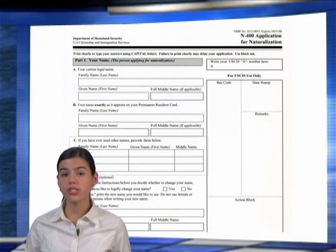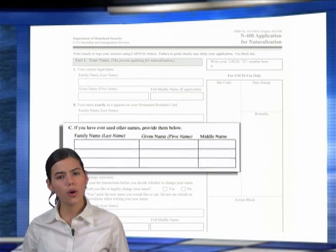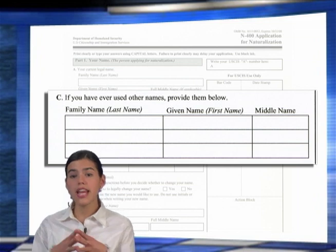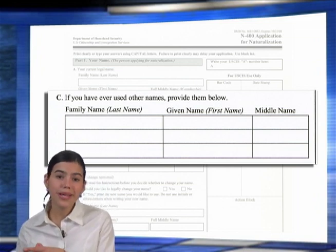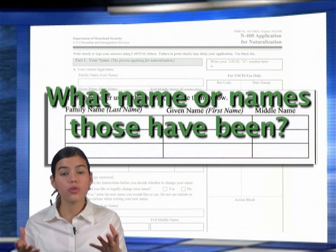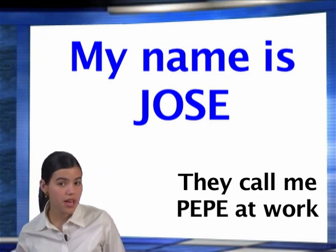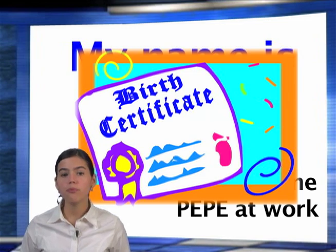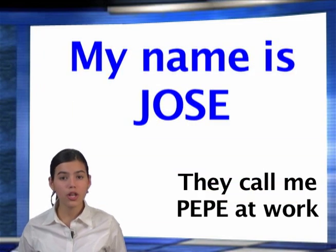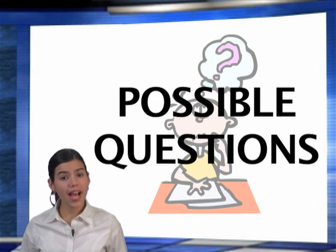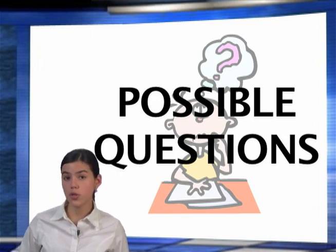In Part 1, Section C, you will need to know if you have ever used any other name. If you have ever used any other name in your life, you might be asked what name or names those have been. For example, you might use another name at work, or maybe you use a different name than what is on your birth certificate. You might have to explain why you have or now use a different name.